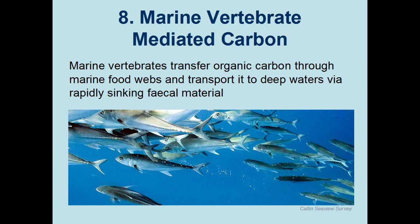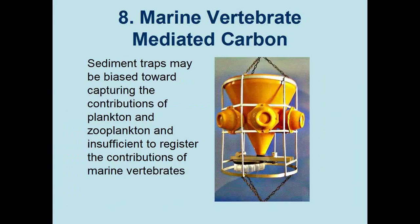You might ask why this mechanism is not included in current models of oceanic carbon cycling. The current key instrument used is the sediment trap, and researchers have pointed out that sediment traps may be biased towards capturing contributions of plankton and zooplankton and insufficient to register the contributions of marine vertebrates. Sediment traps capture the most homogeneous particles associated with plankton but are potentially missing significant events associated with marine vertebrates. The implication is that maintaining healthy populations of marine vertebrates — from anchovies to cod to whales to sea turtles and sharks — may facilitate the rapid transport of carbon from upper waters to the deep ocean and seafloor, where it can be sequestered on millennial timescales.